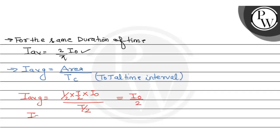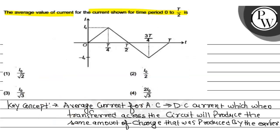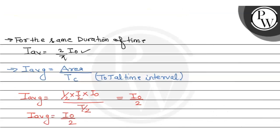So the answer is I₀/2. The option I₀/√2 is incorrect. The correct answer is the second option, I₀/2. So our correct option is second. I hope you understood well all the variables.